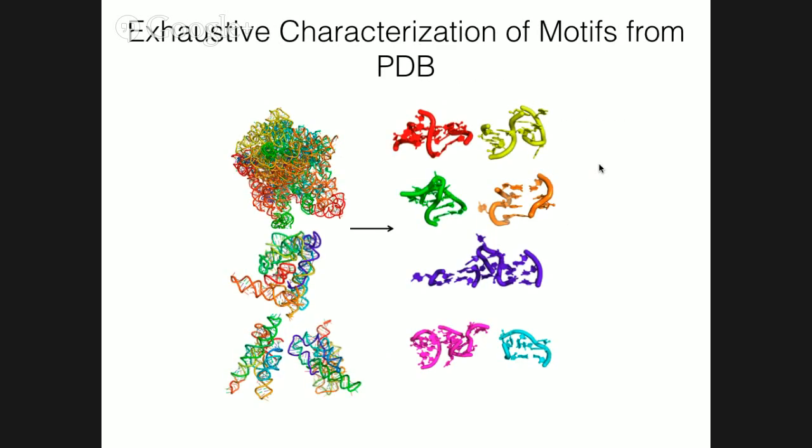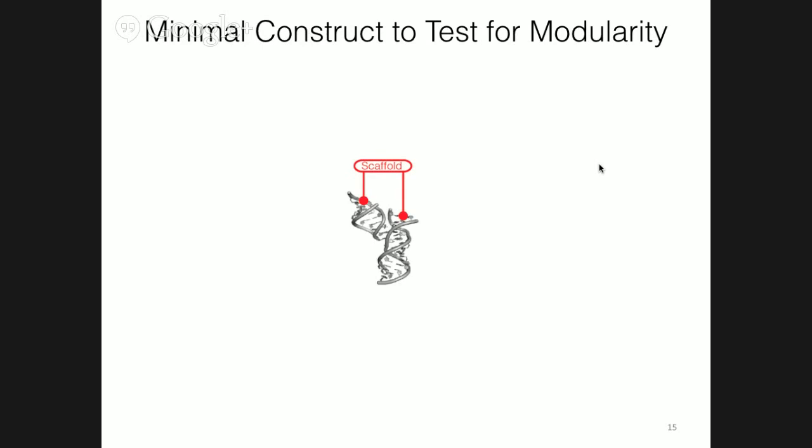So the first thing to do is define all motifs that could be potentially modular. I took the entire PDB set of crystallographic structures under 2.4 Ångström resolution and found all non-canonical sets of residues flanked by Watson-Crick base pairs on each side.